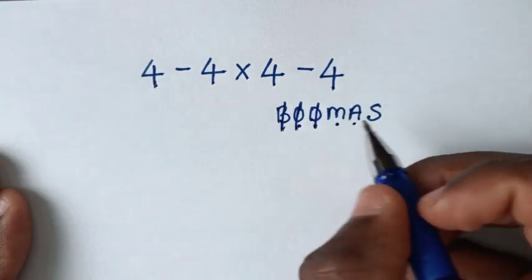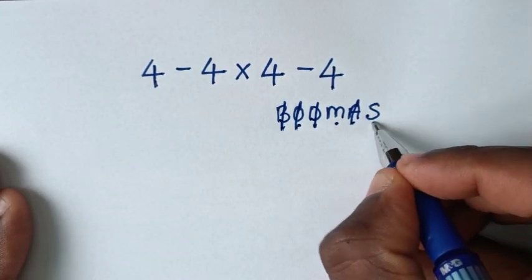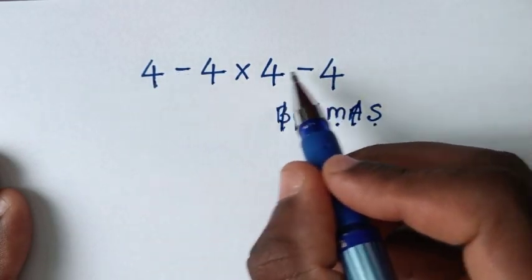A is addition. We don't have addition. S is subtraction. We have subtraction. We have two subtractions.